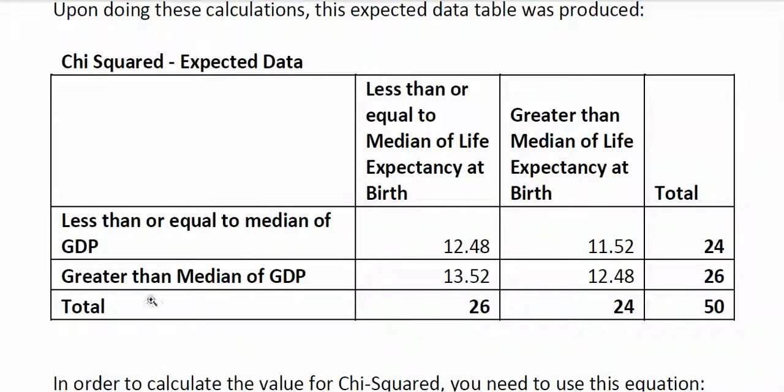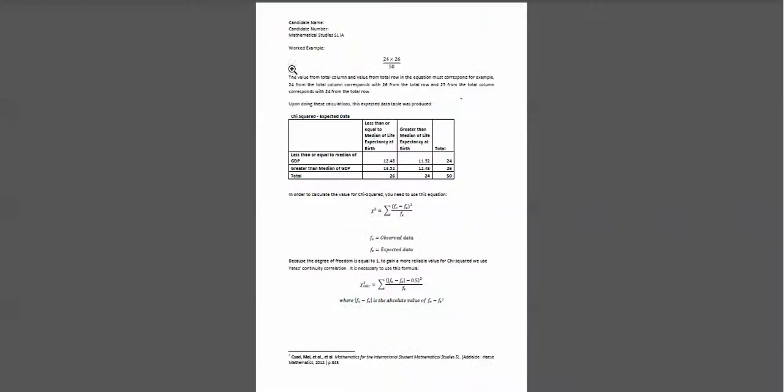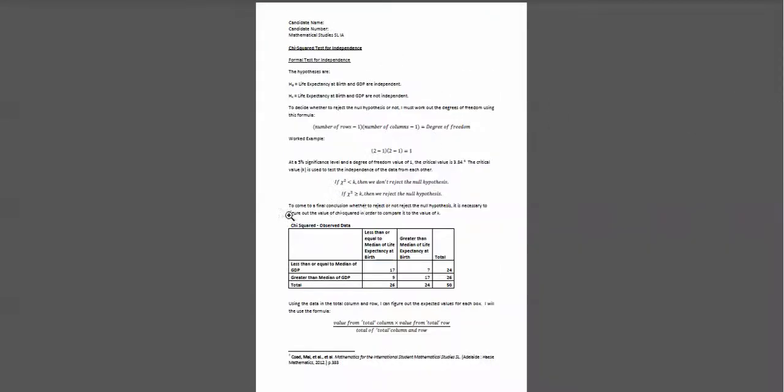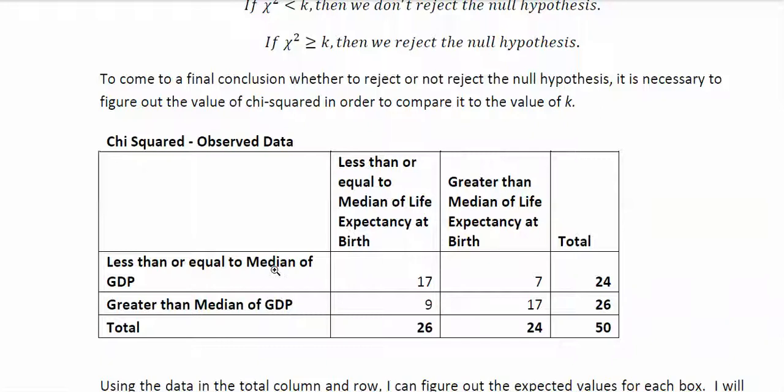And this is the expected data, sorry, the expected data, let me find the, okay, sorry. Here's the observed data here, and you may be wondering how has this unit arrived at these numbers 17, 7, 9, and 17?